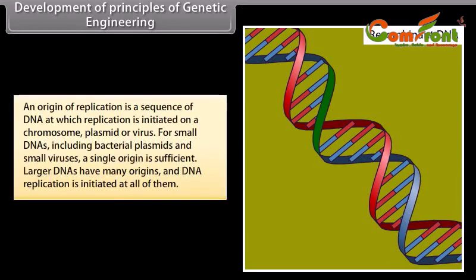The host DNA combined with foreign DNA or artificial DNA is called recombinant DNA. An origin of replication is a sequence of DNA at which replication is initiated on a chromosome, plasmid, or virus. For small DNAs, including bacterial plasmids and small viruses, a single origin is sufficient. Larger DNAs have many origins and DNA replication is initiated at all of them.